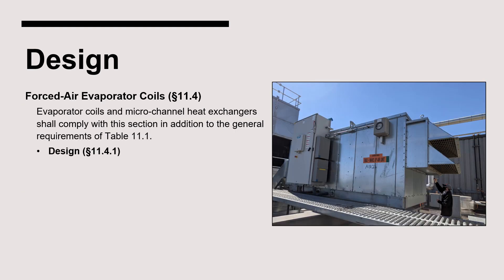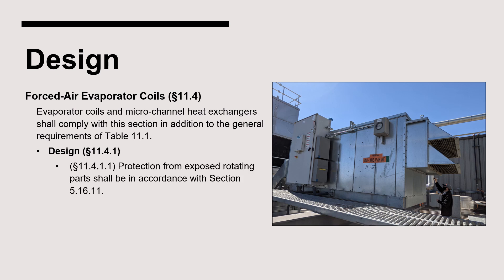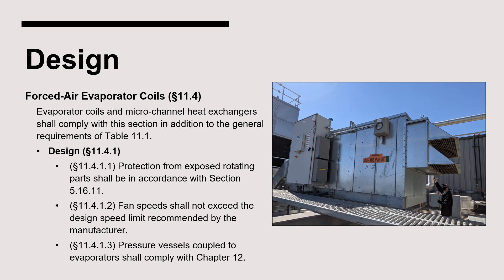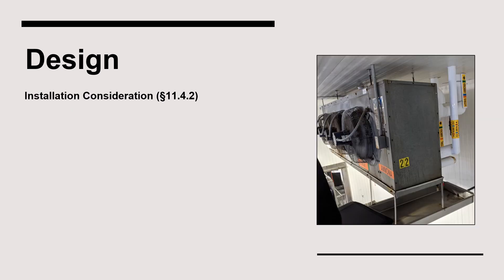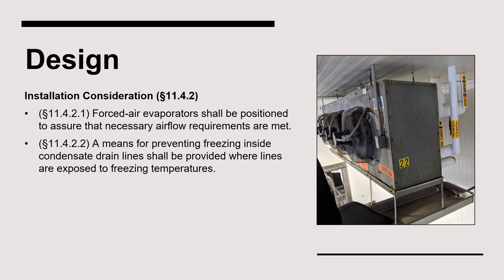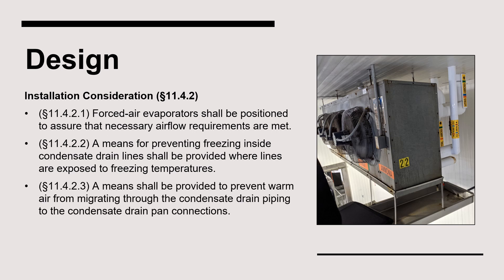Section 11.4 has additional requirements for air cooling evaporators. Rotating parts such as fans must be adequately guarded to protect personnel. Fan speeds must not exceed the manufacturer's limit. Pressure vessels such as surge drums that connect directly to an evaporator must comply with Chapter 12. Section 11.4.2 requires that air cooling evaporators be positioned to achieve proper airflow, a means be provided to prevent water from freezing inside condensate drain lines, and a means be provided to prevent warm air from migrating through condensate drain piping.